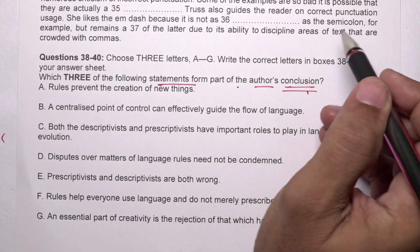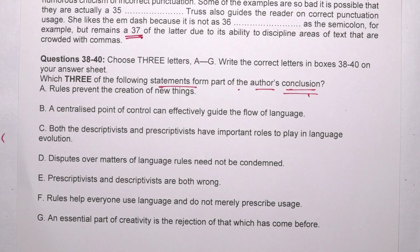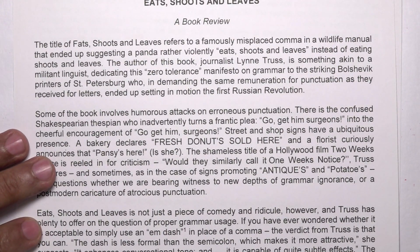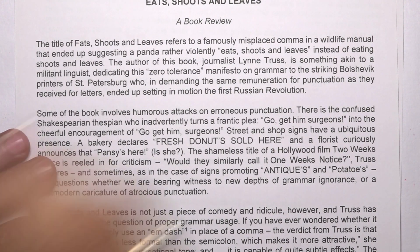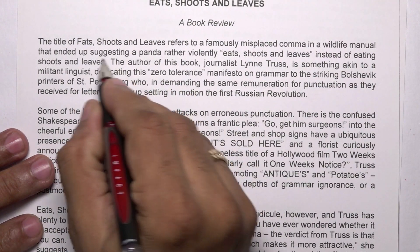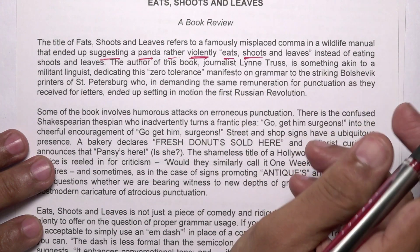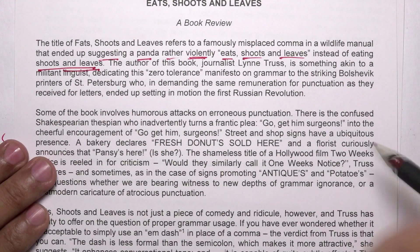The title 'Eats Shoots and Leaves' refers to a famously misplaced comma in a wildlife manual that ended up suggesting a panda rather violently — shoots and leaves — instead of just eating shoots and leaves.